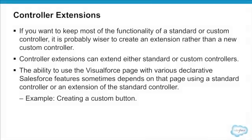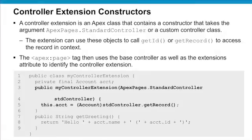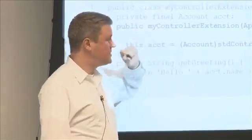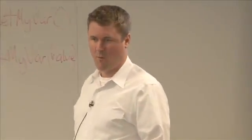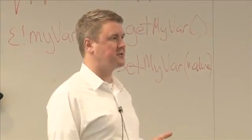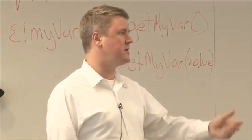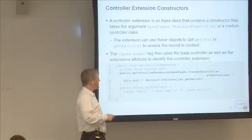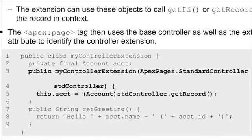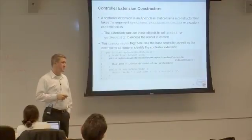Let's talk in more detail about controller extensions. We use controller extensions any time we want to add new functionality or override existing functionality. This is a class that is a controller extension — notice it is not extending anything. In a controller extension, we define a constructor that has passed a reference to the controller it is extending. When someone requests the page which has the extension referenced, it instantiates the standard controller and then passes a reference over to our controller extension.